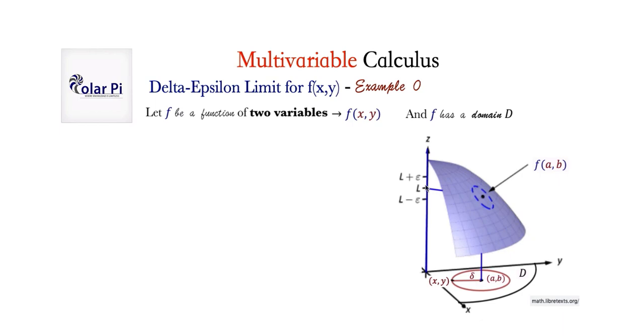And what you do is you create an epsilon neighborhood about l in this manner. So the epsilon neighborhood is still an interval, but this time along the z-axis as opposed to the y-axis in calc 2, right? But yeah, the epsilon neighborhood is still an interval. The main difference is the delta neighborhood is no longer an interval, which it was in calc 2. The delta neighborhood this time is a circular region centered at a, b, a small circular region, I might add, right?